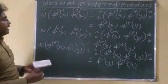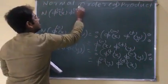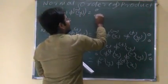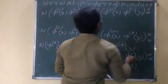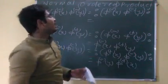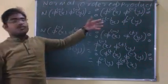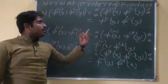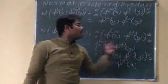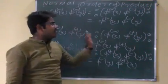If both terms have negative energy, I can write N of φ⁻(x) φ⁻(y), and the normal order product will just be φ⁻(x) φ⁻(y), since both are already negative energy and there is no need to worry about which comes first. This shows that the order of factors inside the normal ordered product is not critical — what matters is that negative energy terms appear before positive energy terms.